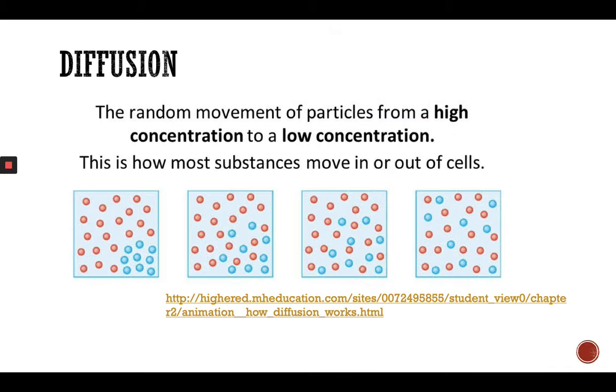Let's look at diffusion. The random movement of particles from a high concentration to a low concentration is called diffusion. This is how most substances move in or out of the cell. We've got a video that I'm going to show you now.